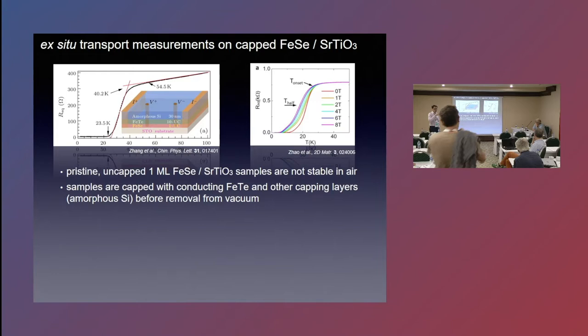So to do transport measurements, they have to be capped. They're typically capped with an iron telluride layer and then some other stuff to protect it. You can see that the onset of the superconducting transition is quite a bit lower than 60 or 70 Kelvin.